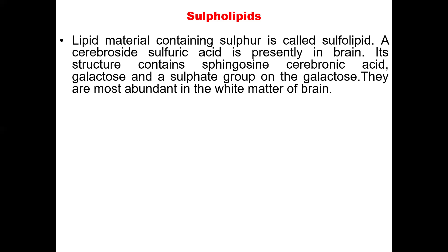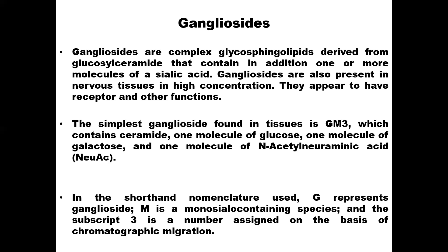Another class of lipids is gangliosides. Gangliosides are complex glycosphingolipids that are derived from glucosyl ceramide. They contain, in addition, one or more molecules of sialic acid. They are present in nervous tissues in high concentration and appear to have receptor and other functions, serving as receptor molecules allowing some molecules to be attached to the cell membrane for communication or transportation.